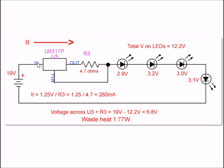If you measure the voltage drop across U3 and R3, that's going to be 6.8 volts. 6.8 plus 12.2 goes back to 19 volts. In the process, if we take the 6.8 volts times 260 milliamps, the energy we wasted as heat in this circuit is 1.77 watts.